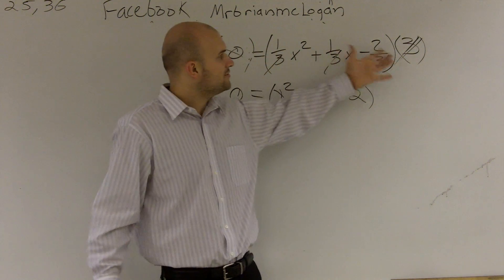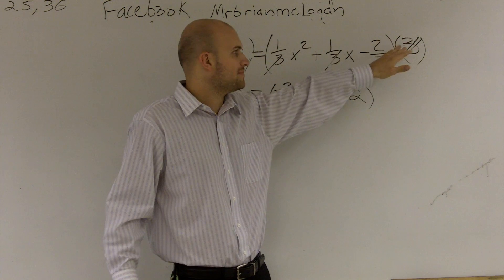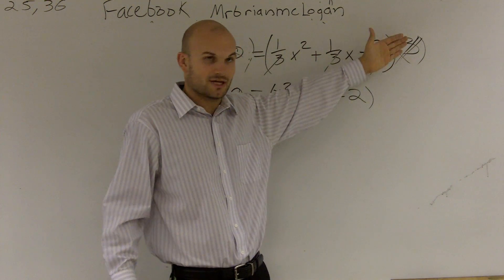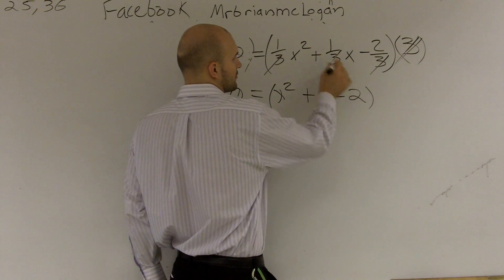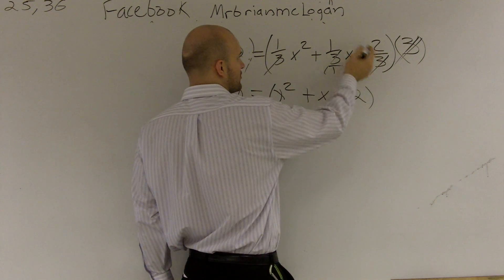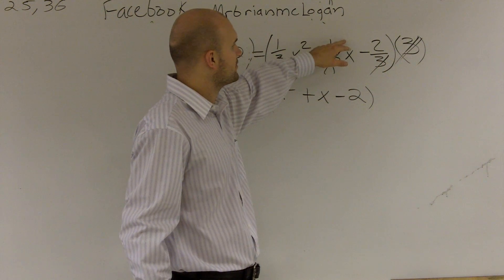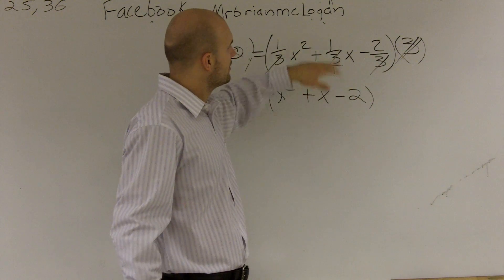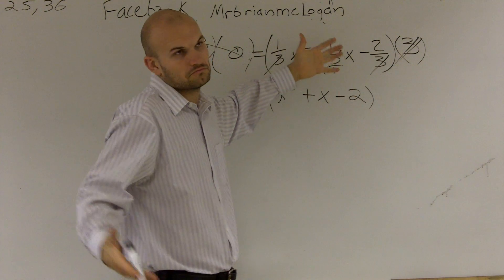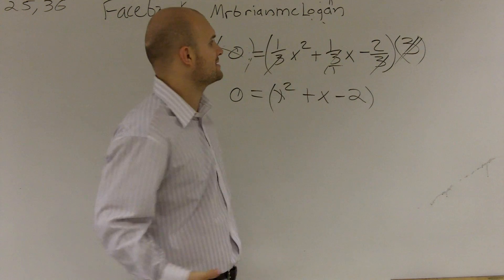Whenever you have a fraction, ladies and gentlemen, you can always multiply by that denominator, like multiply by the reciprocal. 3 over 1, the reciprocal of that, multiply by your 3 over 1 on top, or it's like 1 over 3, and then pretty much what you get is they cancel out.